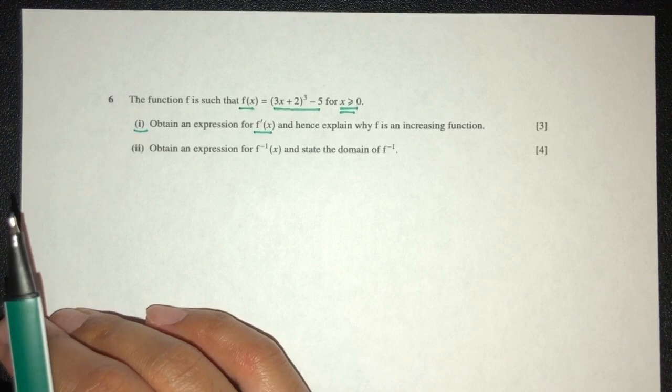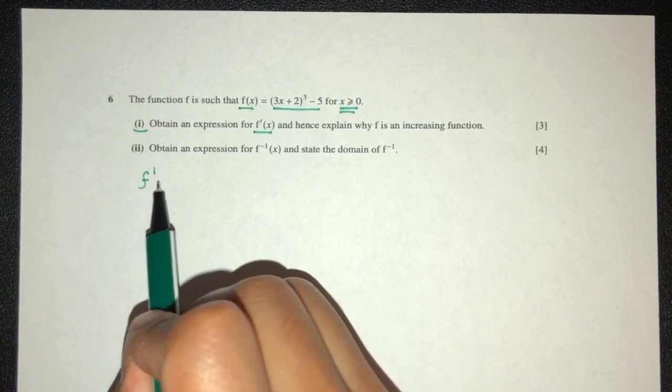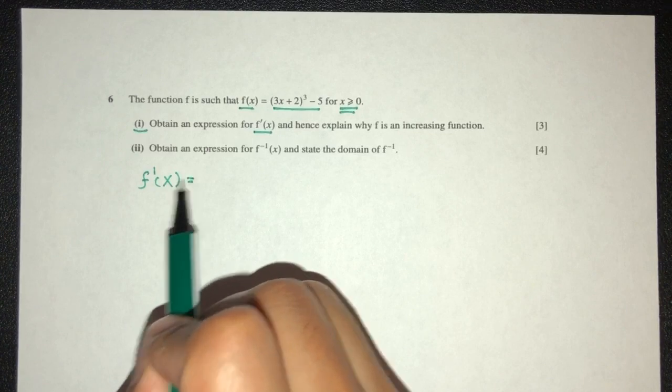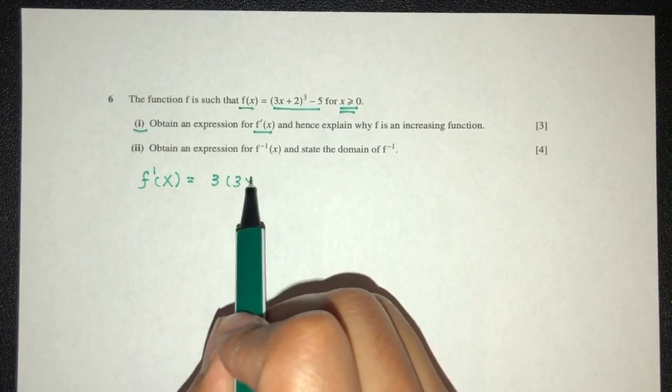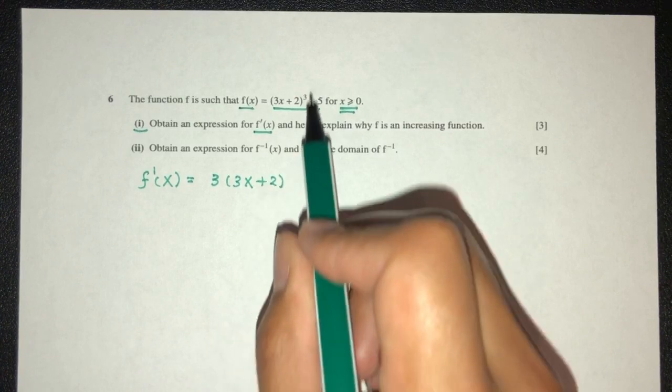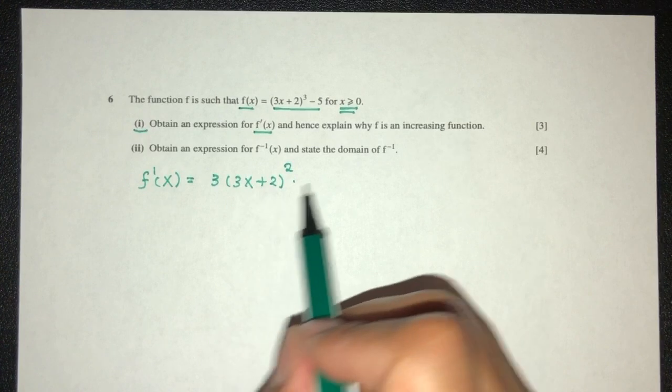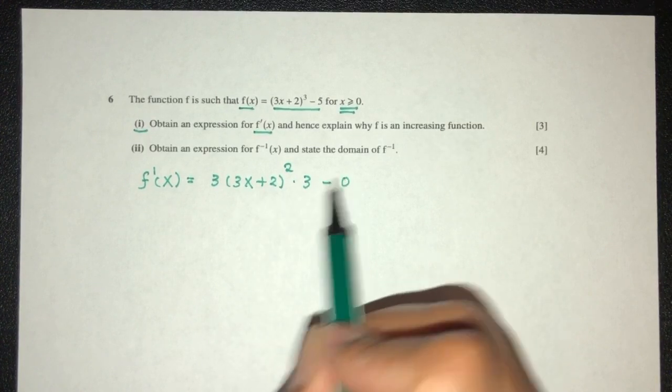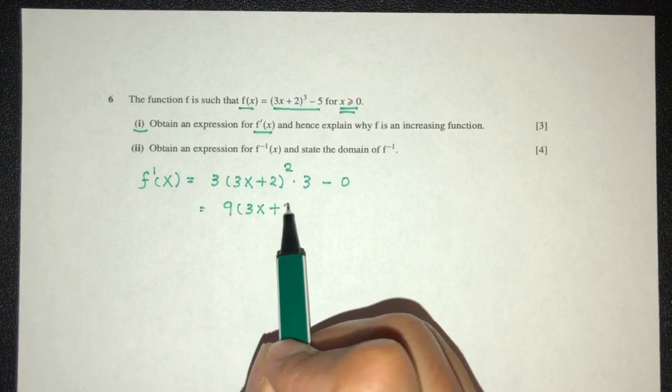and hence explain why f is an increasing function. So first, find f' of x. It is simply differentiation of this one, that should be 3, 3x plus 2, minus 1, that should be 2. Then multiply by d by dx of the value inside, that should be 3. This will be 0. That will be 9, 3x plus 2 squared.